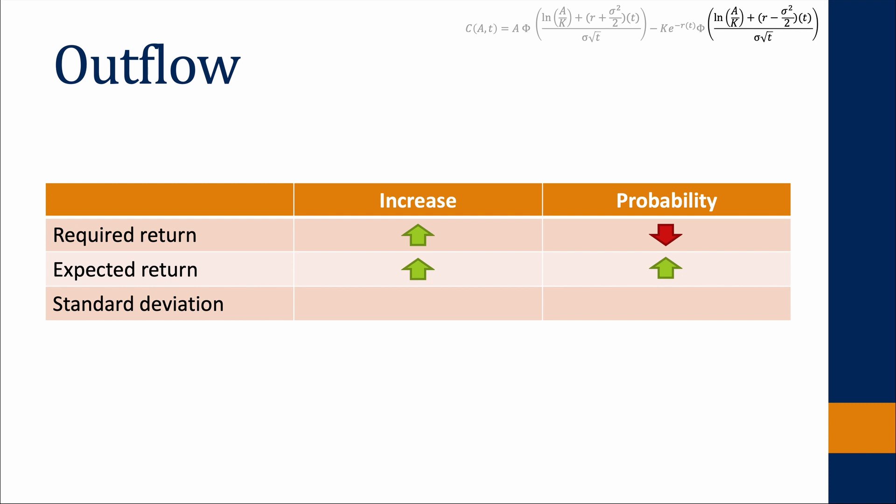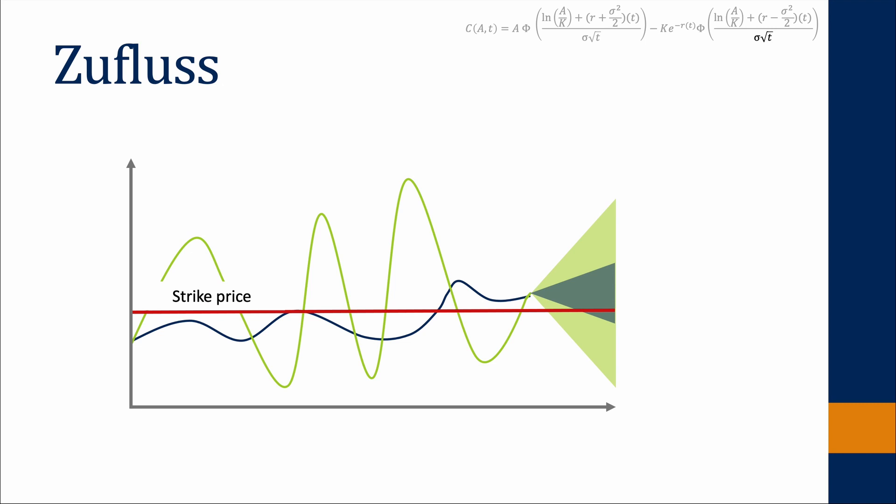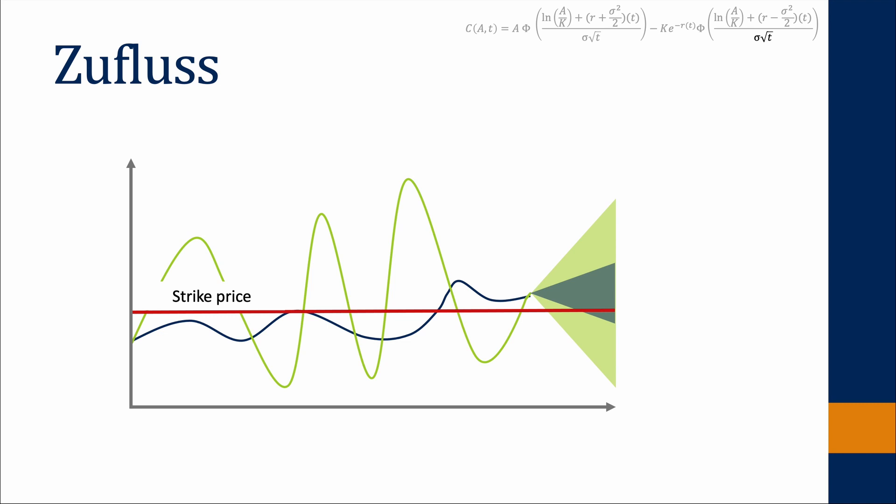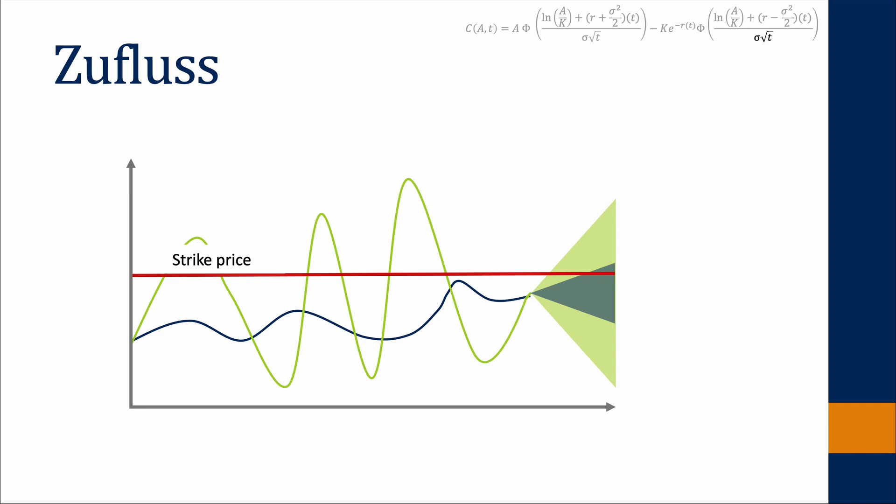An increase in the standard deviation has no clear consequence — the consequence depends on the current stock price. If the stock price is above the strike price, a lower standard deviation increases the probability, since it is less likely that the stock price falls below the strike price. Whereas if the stock price is below the strike price, a higher standard deviation increases the probability, since a higher volatility increases the probability that the stock price will exceed the strike price on maturity.